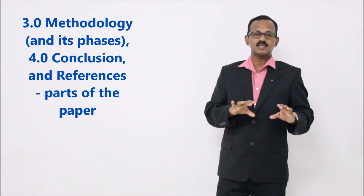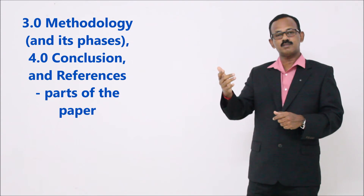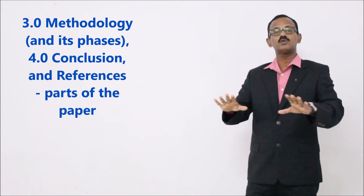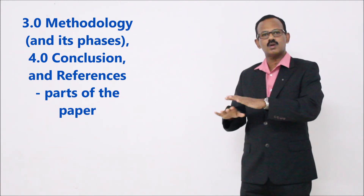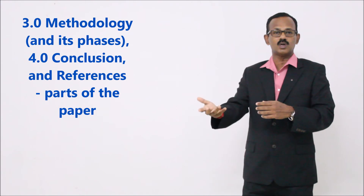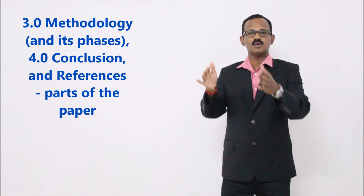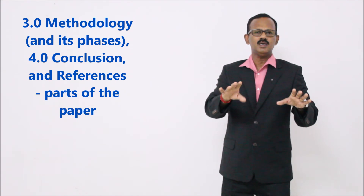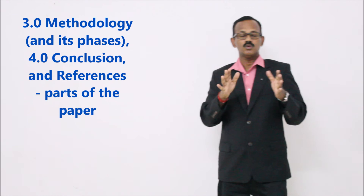4.0 will be Conclusion. In the conclusion, you only have to tell — by doing all the work in this particular paper — what exactly has turned out as an outcome of your work. It is not something you are going to write out of wishful thinking; there should be proof for what you are going to write as a conclusion. The conclusion should be brief and should never exceed maybe half a page on an A4 size sheet typed in font size 12.